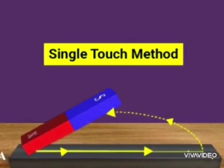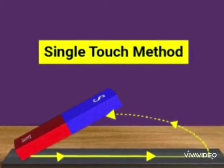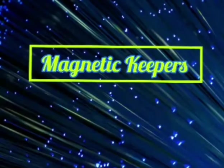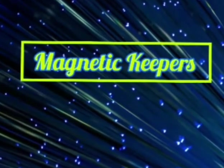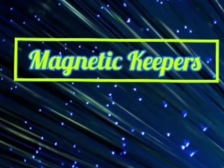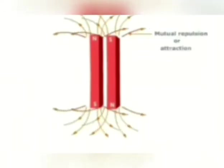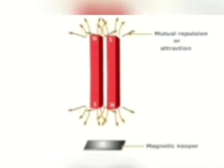This method of making a magnet is called single-touch method. Now, I am going to explain about magnetic keepers. The magnets tend to lose their magnetism gradually and become weak over a period of time if they are not stored properly. To prevent the loss of magnetism, the magnets should be stored properly when not in use.